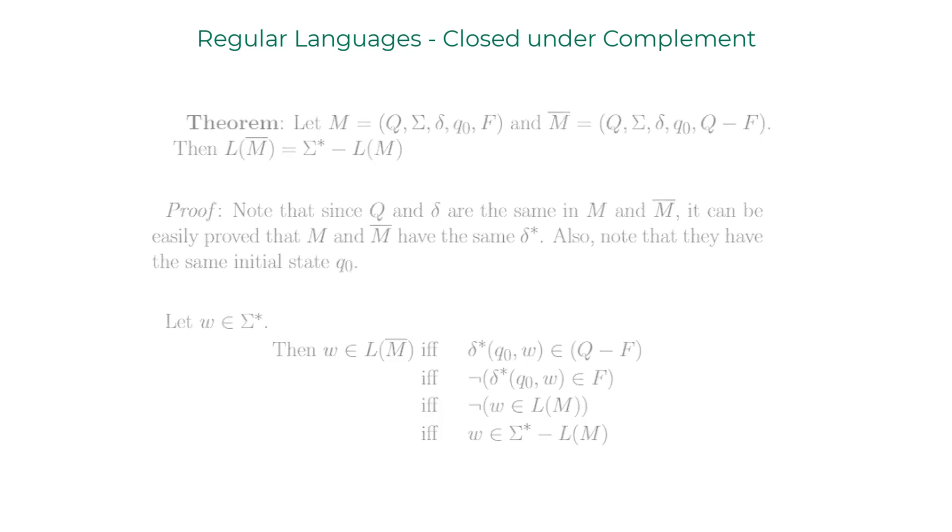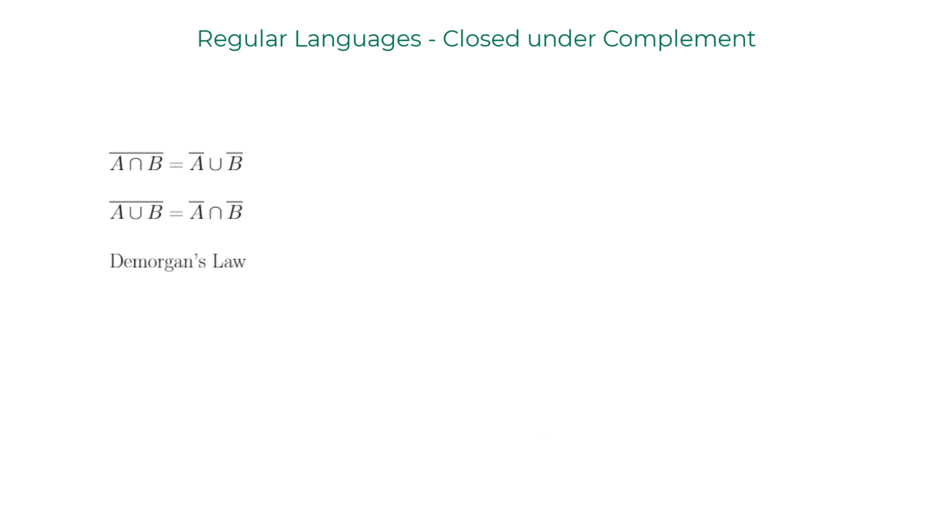I'll finish the discussion about the complement of regular languages by talking about DeMorgan's law. I'm sure you're familiar with this. Let's see this in action for regular languages. Here is a regular language L for the machine M where W is the empty string epsilon or ends in zero. This DFA clearly accepts the language.